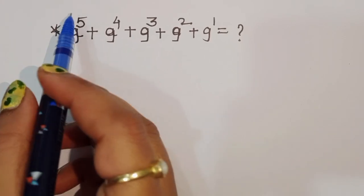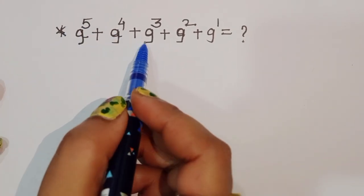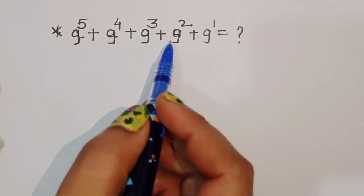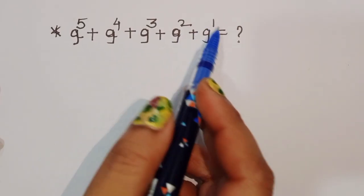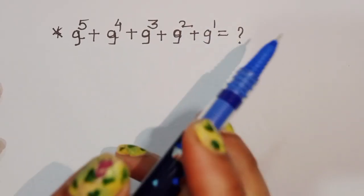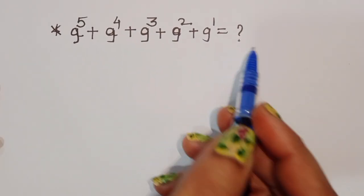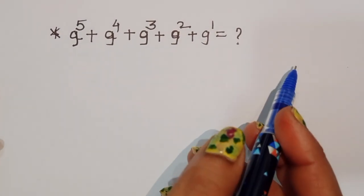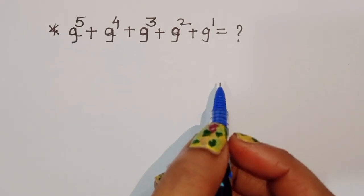The question is: 9 power 5 plus 9 power 4 plus 9 power 3 plus 9 power 2 plus 9 power 1 is equal to what? We have to find out the value of this. Let's see the solution.